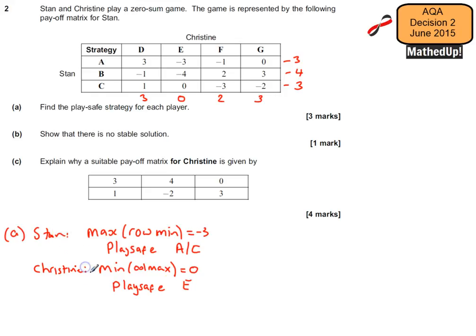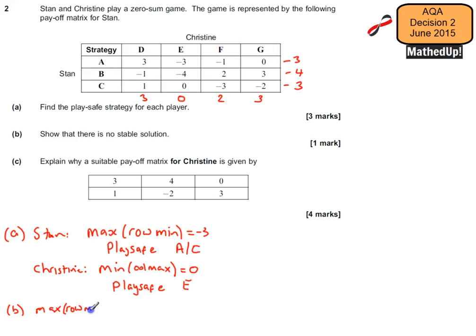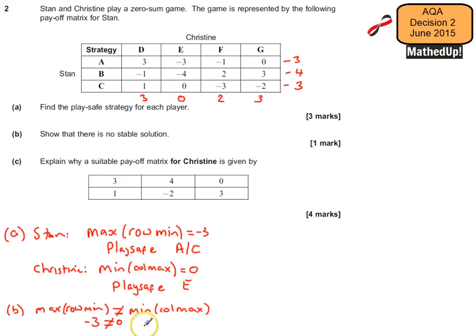That gives Christine a play safe strategy of strategy E. Now part B says show that there is no stable solution. In order for a stable solution to exist, the maximum row minimum would have to equal the minimum column maximum. Because our maximum row minimum is negative 3, which is not equal to our minimum column maximum of 0, there is no stable solution.